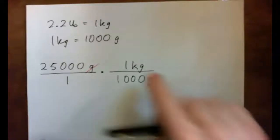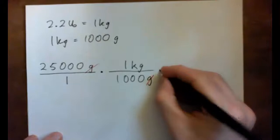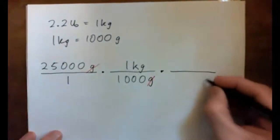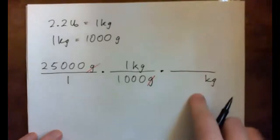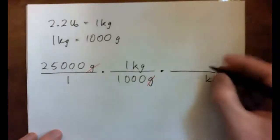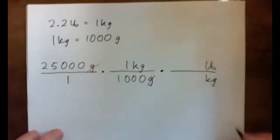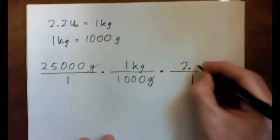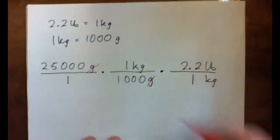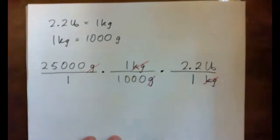But I've got to get from kilograms to pounds, so now I actually want the kilograms to cross-cancel. So I need another unit fraction with kilograms on the bottom and pounds on the top. And we have 1 kilogram equals 2.2 pounds. And these kilograms are going to cross-cancel. Now, does that whole thing make sense? Yes.